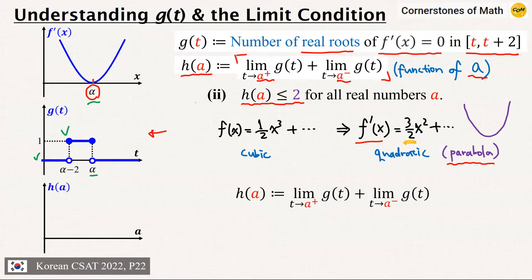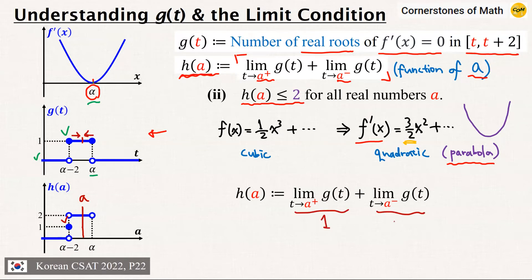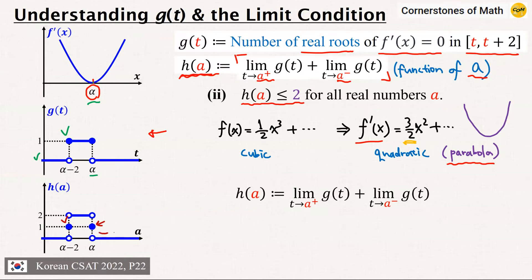Now let's think about the graph of h(a). When a is less than α−2, h(a) is 0 because both limits from the right and the left are 0. However, when a is exactly α−2, the limit from the left is still 0 but the limit from the right becomes 1, so h(a) becomes 1. Then immediately after that, h(a) jumps to 2 because both limits now have the value of 1. Then at a = α, the value falls back to 1 again, and then it falls to 0.